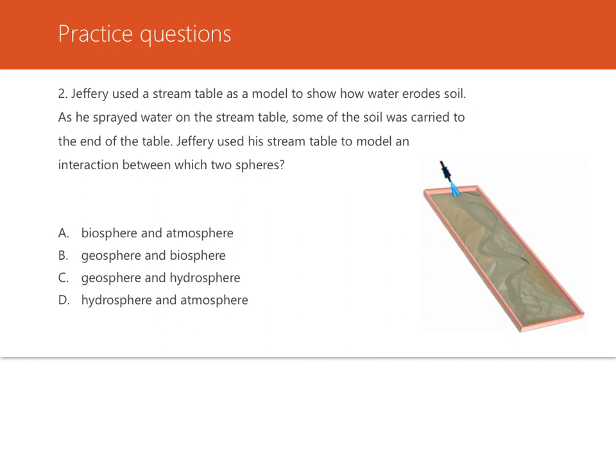Number two, Jeffrey used a stream table as a model to show how water erodes soil. So as he sprayed water on the stream table, some of the soil was carried to the end of the table. Jeffrey used his stream table to model an interaction between which two spheres. So water erosion is the result of interactions between the geosphere and the hydrosphere, between the geosphere, like the soil, and the hydrosphere, like the water. So we're going to go with C.